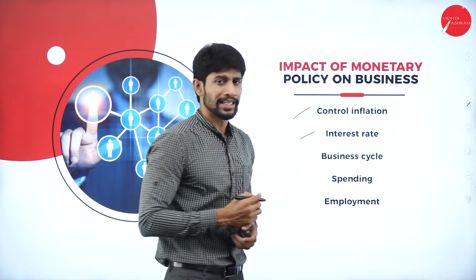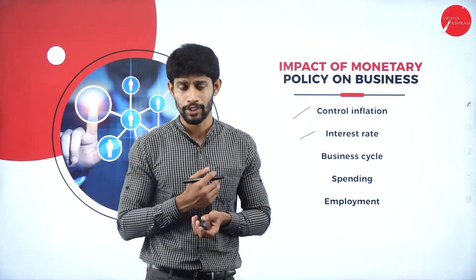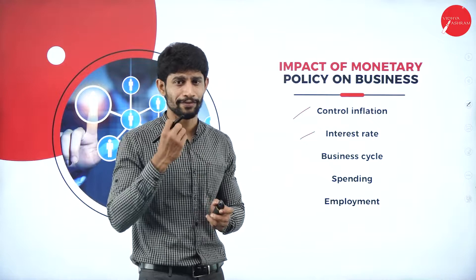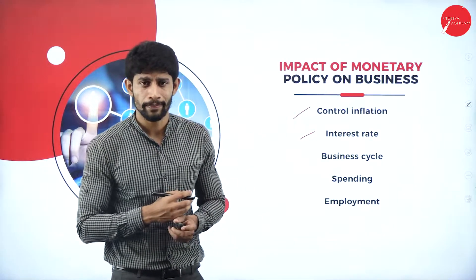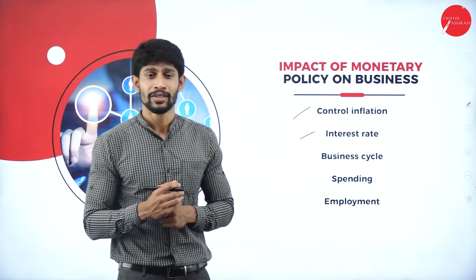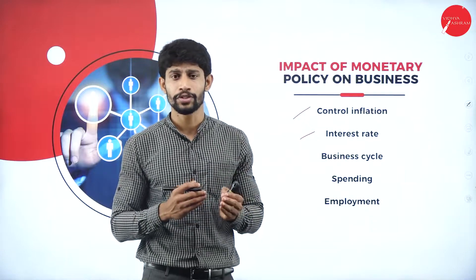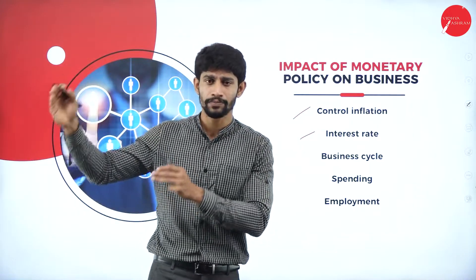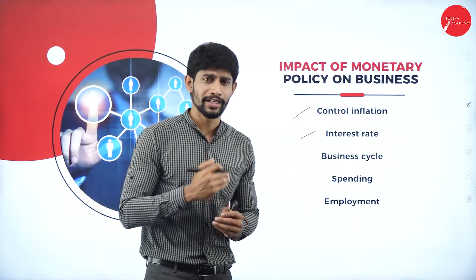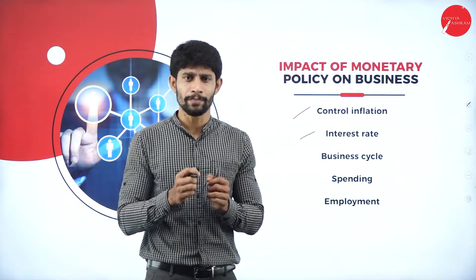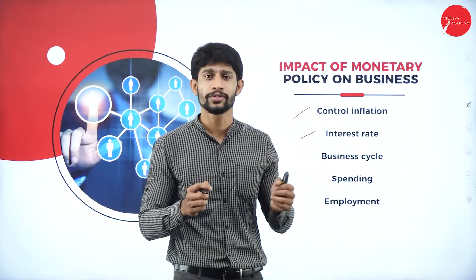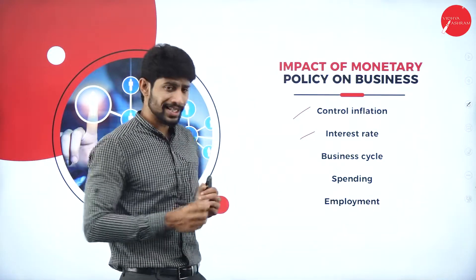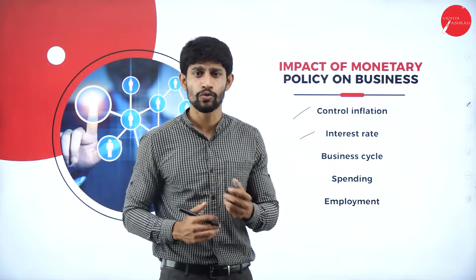Next, interest rate: based on the interest rate, we borrow loans from the government. If they impose a less rate, we borrow more funds; if they impose a high rate, we borrow less. Next, business cycle: monetary policy impacts the business cycle — from purchasing raw materials, converting them to finished goods, sending to wholesalers, then to retailers, and finally to customers. If there is no fund with the wholesaler, they won't purchase from the manufacturer, causing problems throughout the cycle.